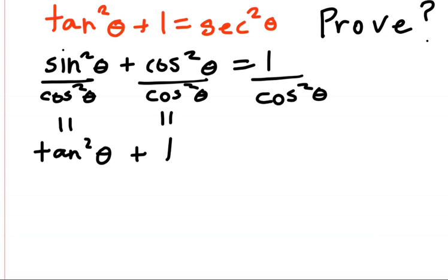So this just equals 1. And 1 over cosine squared theta is, what do you know, secant squared theta. So there you go.